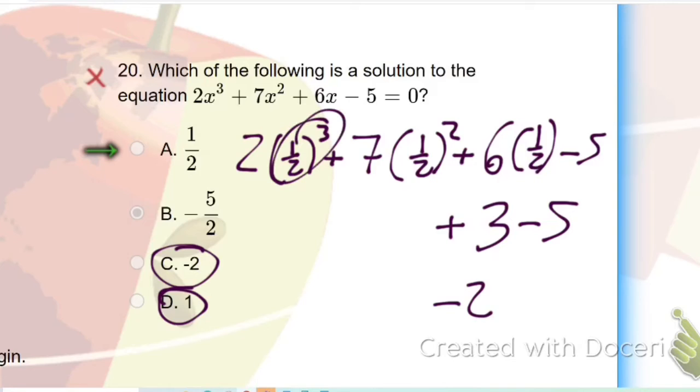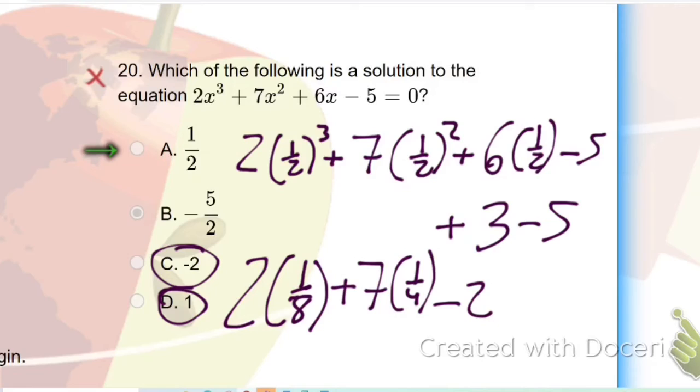So what I know here is 1/2 cubed is like 1 over 2 times 2 times 2, which is 8. So this is like saying 2 times 1/8 plus 7 times 1/4 minus 2.